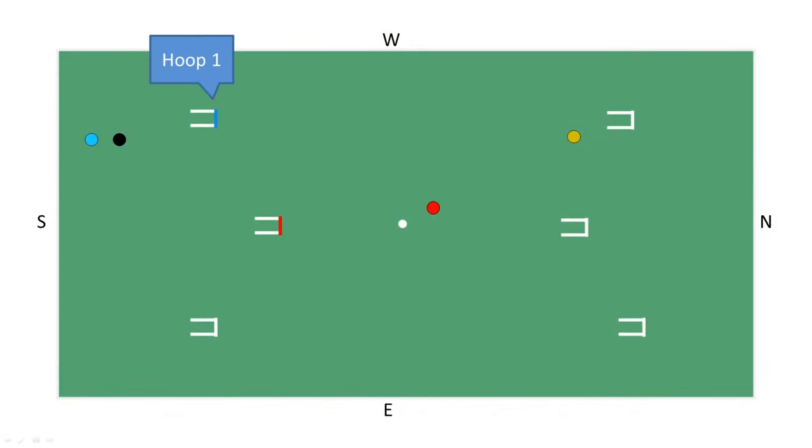The starting position for this video has blue and black balls near the south boundary adjacent to hoop 1. The red ball is in the central area of the court and is referred to as being in a pivot position.